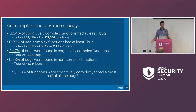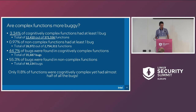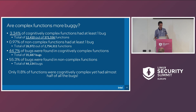Are cognitively complex functions just more buggy in general? Only 3.34% of cognitively complex functions had a bug — a relatively low number. Compared to less than 1% of non-complex functions. But in terms of total bugs, 44.7% of bugs were found in cognitively complex functions. While only 11.8% of functions were cognitively complex, they had almost half the bugs. So if you want to make your repository better, focus on cognitively complex functions first — you have fewer of them and they're likely the most problematic part of your project.